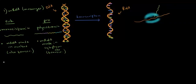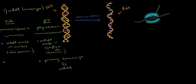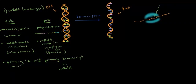The last difference: in prokaryotic cells, the primary transcript — the RNA made during transcription — is already mRNA, ready to go to the ribosome and be translated. In eukaryotic cells, the primary transcript must be processed first. Only after processing does it become mature mRNA that can go to the ribosome and be translated.